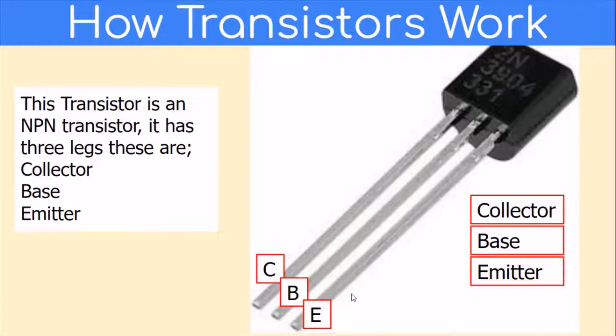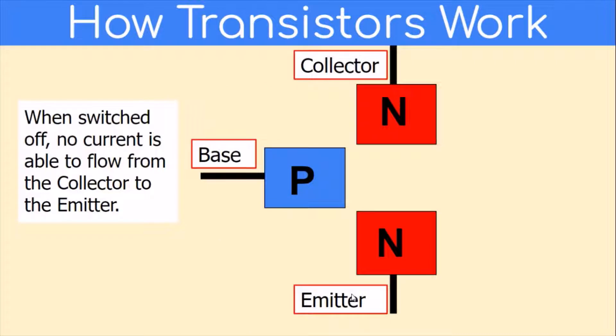When switched off, no current is able to flow from the collector to the emitter. Here we've got an illustration showing collector, base, and emitter. These represent the three legs of the transistor.